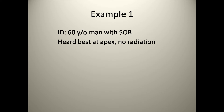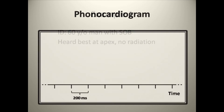Here is a schematic of a phonocardiogram, which is a visual representation of cardiac auscultation. The horizontal axis represents time, where for this particular example, each hash mark will represent 200 milliseconds. The vertical line represents relative intensity.